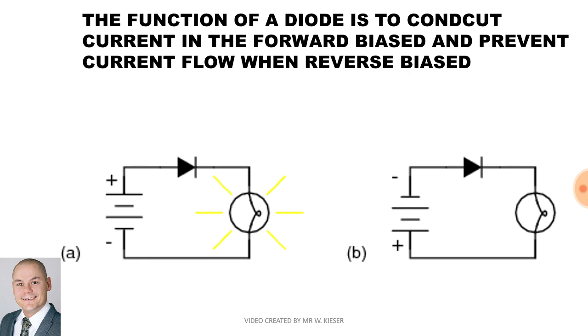How a diode operates? A diode will conduct current in forward bias and block current when it's in reverse bias.